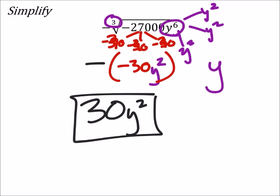And of course you could have just taken y to the power of 6 to the power of one-third, and you would have gotten y squared as well.